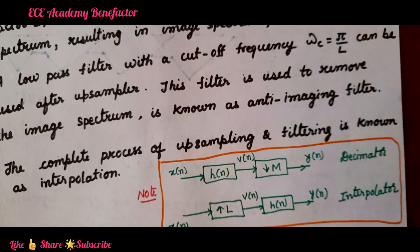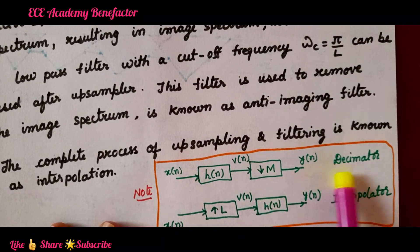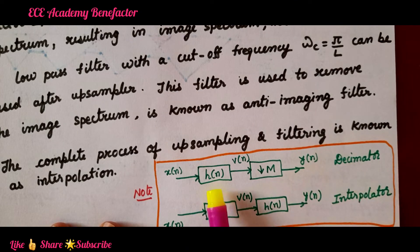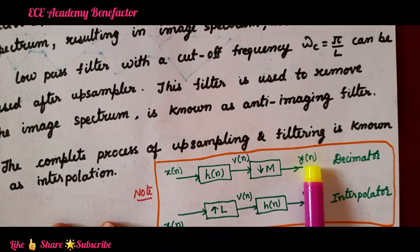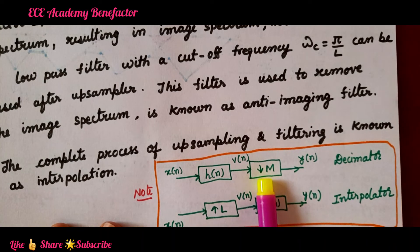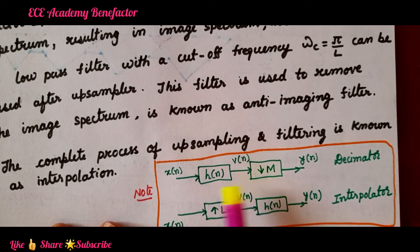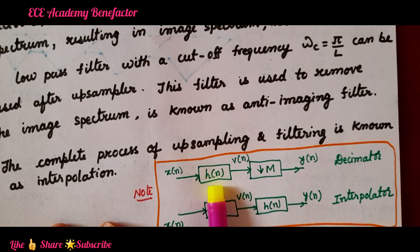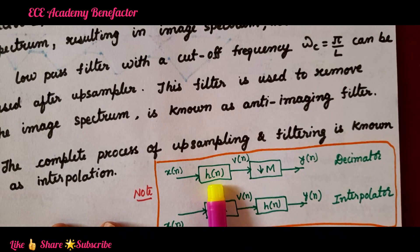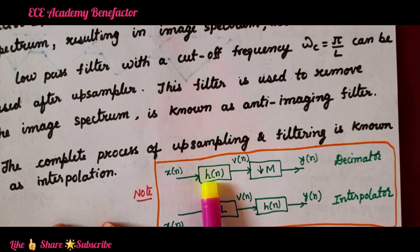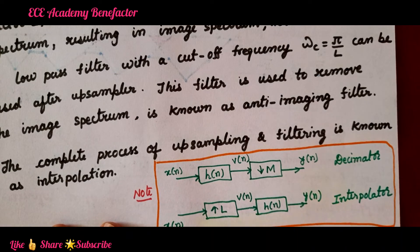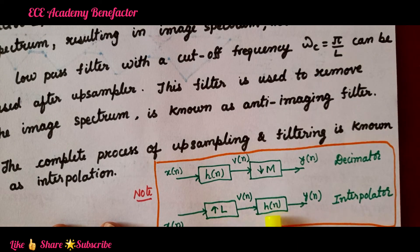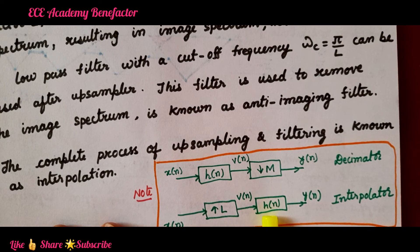Let us have a note here. Decimator: in decimator x(n) is the input signal and y(n) is the output signal. Before doing down sampling by a factor M we are placing an anti-aliasing filter. In decimator anti-aliasing filter is placed before down sampling. In interpolator after doing upsampling we are placing anti-imaging filter to avoid the image spectrum.